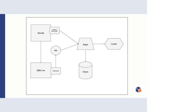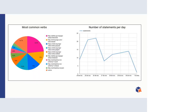Here are some examples of data views. We have data from Moodle and from the BBB instances. For example, we can see the most common verbs: interacted, viewed, paused, played, seeked, initialized, joined, left, and others. We also have a graph of the number of statements per day — tracking all statements with no distinction about which verb each statement contains.